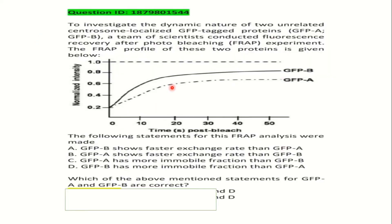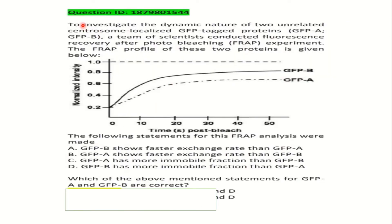Now let's look at a question from December 2019 CSIR exam. To investigate the dynamic nature of two unrelated centrosome-localizing GFP-tagged proteins — GFP-A and GFP-B — a team of scientists conducted FRAP experiments to determine which protein has higher mobility. Looking at the FRAP recovery graph, we need to identify the correct statement from the given options.